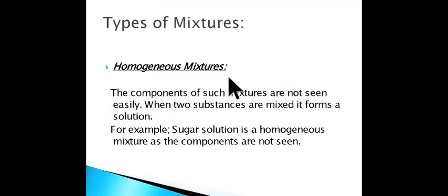Let's study types of mixture. Basically there are two kinds of mixture. First is homogeneous mixture. The components of homogeneous mixture are not seen easily. When two substances are mixed, it forms a solution. For example, sugar solution is a homogeneous mixture as its components are not seen.